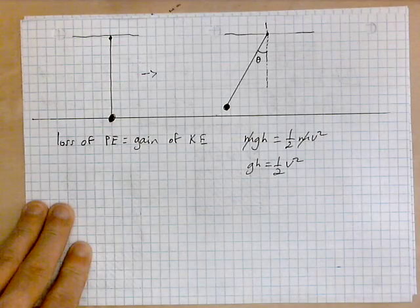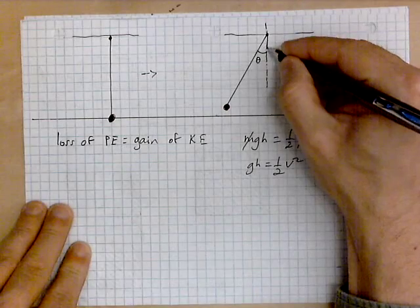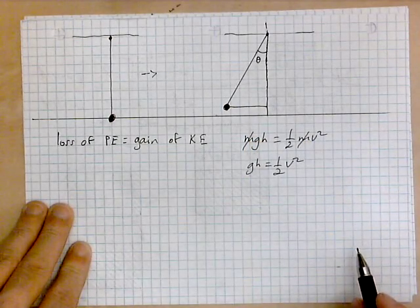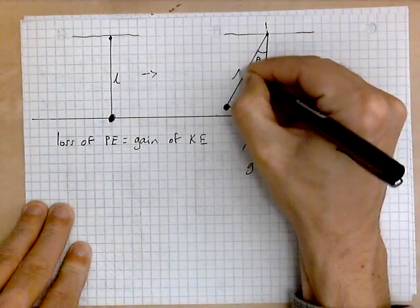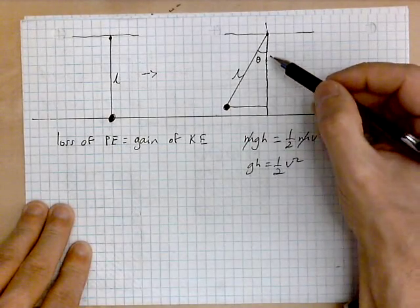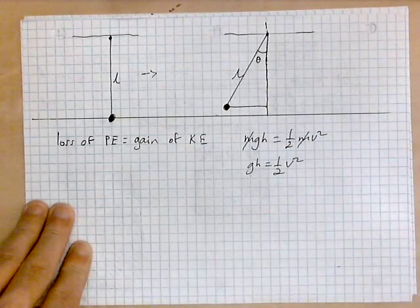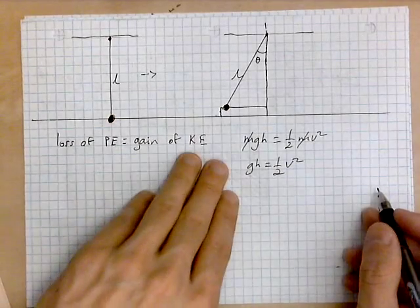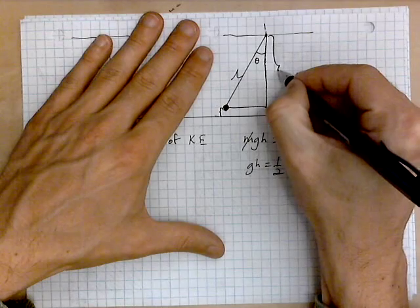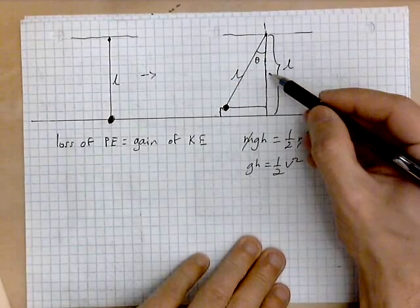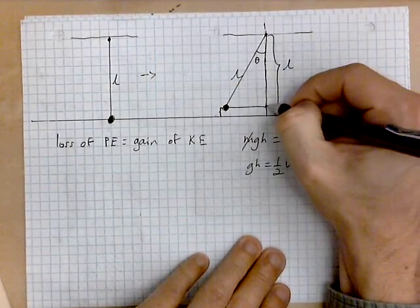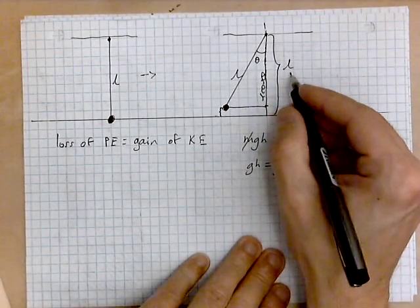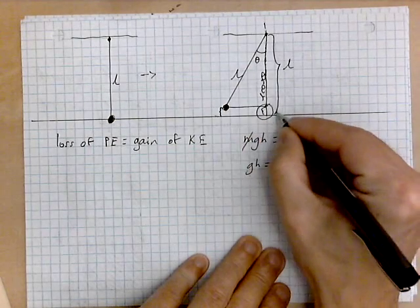Now the question is: what is the height of the object? We have to use a bit of trig to find the height. We make a triangle, and we observe the following: if the length of the string is l, then this side is also l. By basic trig, the height of the object equals l minus l·cosine(theta). That vertical component from here to here is l·cosine(theta), and the difference between these two gives us the height h.